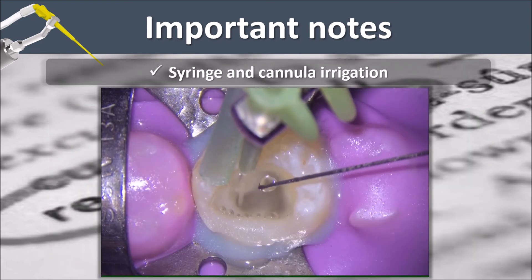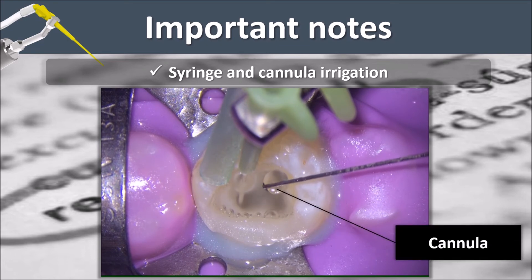In cases where better irrigation control is desired, or even an ultrasonic device that does not have a reservoir, a cannula and syringe can be used for concomitant irrigation.